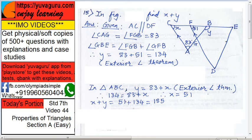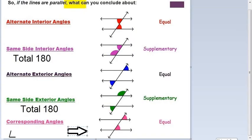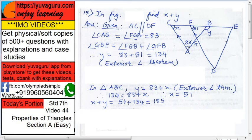These are corresponding angles - same side of the transversal and same direction of the parallel lines, up to up or down to down. So these are corresponding and they are always equal. So CAG is 83, therefore FGB will be 83. Now FGB you got it as 83.